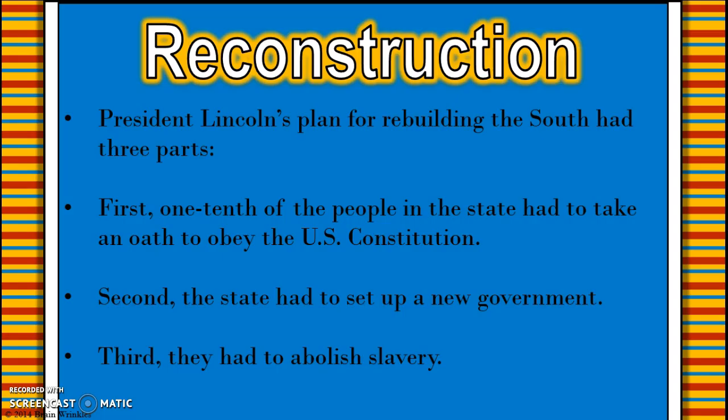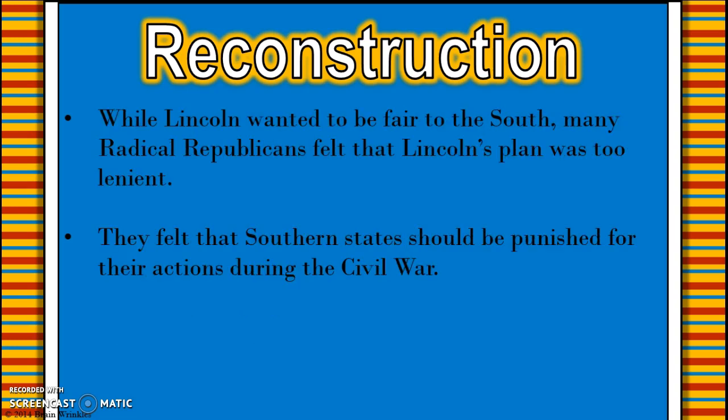Lincoln had a plan for rebuilding the South that was very simple. He wanted just one-tenth of the people in each state to take an oath to obey the US Constitution, then to set up a new government and to abolish slavery. Confederate leaders and generals could not take this oath, and since it's one-tenth of the people, it was called the 10% plan. Lincoln wanted it to be fair for the South, rebuild the country quickly, and bring everything back together. But the Radical Republicans felt it was just too lenient, too soft, and that the southern states should be punished for their actions.